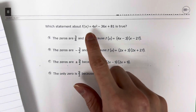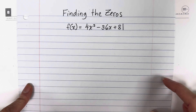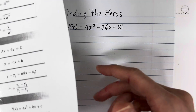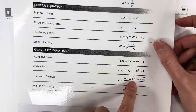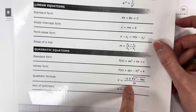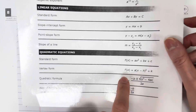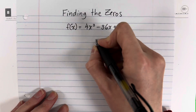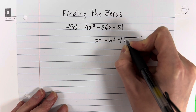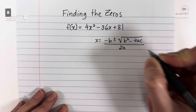The first thing I did is copy this on a separate piece of paper and we are going to find the zeros. To find the zeros, you will need to use the quadratic formula. From your reference materials, the quadratic formula is: x equals negative b plus or minus square root of b squared minus 4ac, all divided by 2a. Let's write that down.